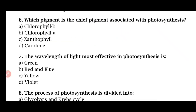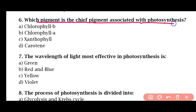Question 6: Which pigment is the chief pigment associated with photosynthesis? Options: Chlorophyll B, Chlorophyll A, Xanthophyll, Carotene. The correct answer is option B: Chlorophyll A.